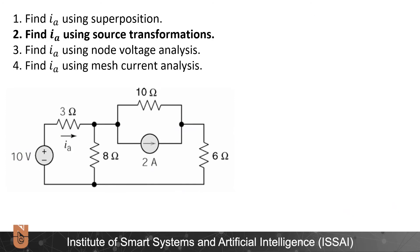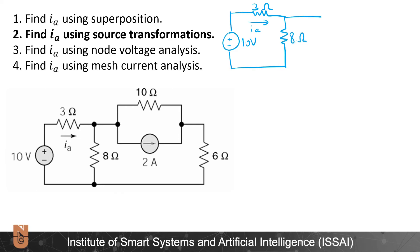Now solving using source transformations, keeping IA intact and transforming only the right side of the circuit. The 2-ampere source in parallel with 10 ohms becomes a 20-volt voltage source. Adding 10 ohms and 6 ohms in series gives 16 ohms. Then transforming back to a current source: 20/16 amperes in parallel with 16 ohms. Combining 8 ohms in parallel with 16 ohms gives 16/3 ohms.